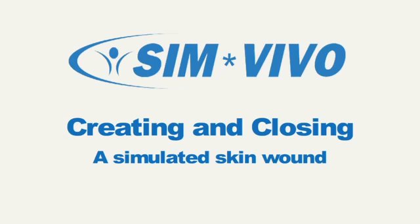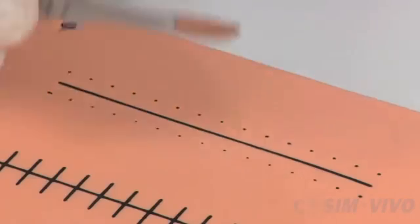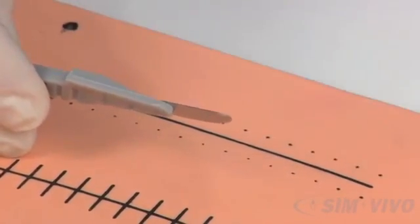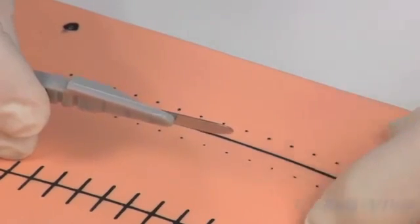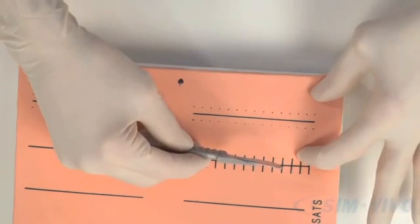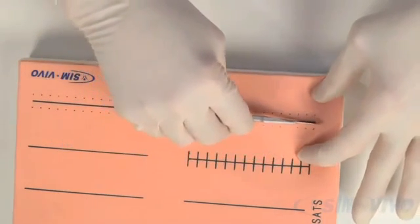Now let's create and close a simulated skin wound. To make an incision, we are going to use the scalpel with a number 10 blade, the large one. Hold the scalpel in your dominant hand like a violin bow. We are going to incise the lower left line with a dot on either side. In order to provide traction and counter traction, use your thumb and index finger of your non-dominant hand to spread the skin as you cut the incision.